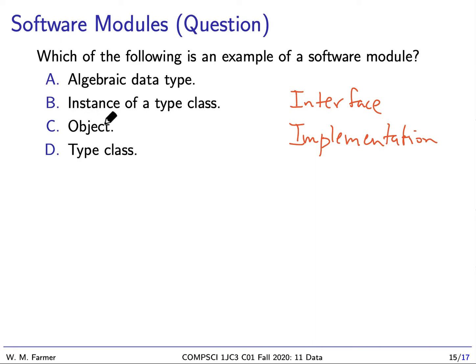Well, there's two examples. The first is an instance of a type class. Remember, a type class has a set of functions, which are called methods. And an instance of that gives implementations to those methods. So this is definitely true. Another example is an object. And an object actually equals data plus operations. And the operations. And these are also called methods. These operations are the interface of the object. And the object also includes the implementation. So both of these are really examples of software modules.